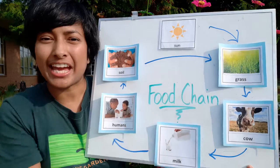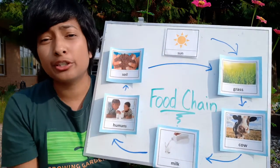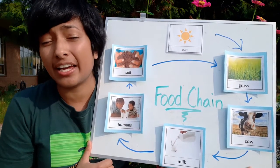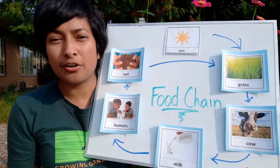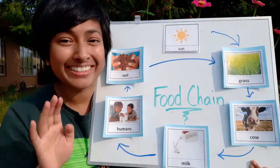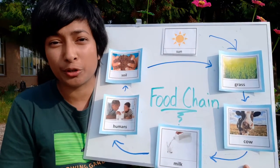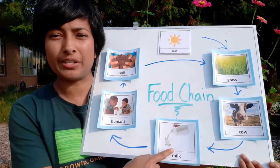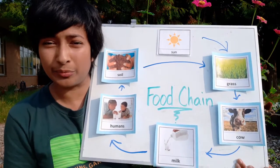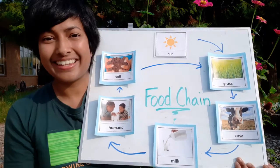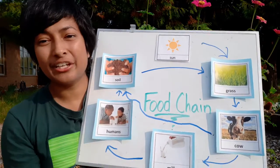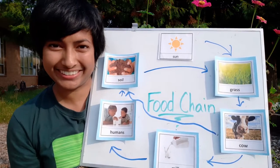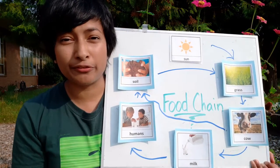Let's get back to our milk example. The grass uses energy from the sun and the soil to produce its own food, which means that the grass is a producer. The cow gets their energy from consuming the grass, so the cow is a consumer — specifically an herbivore. Humans get energy from drinking the cow's milk, which means humans are also a consumer, an omnivore to be exact. The cow's manure is given back to the soil for worms to break down, which means that worms are decomposers. This provides energy and nutrients for future plants to grow.